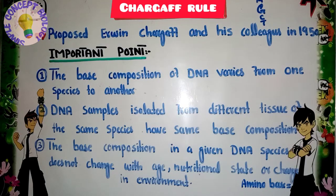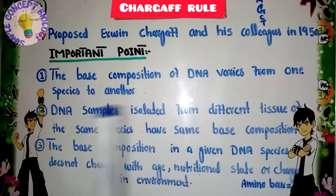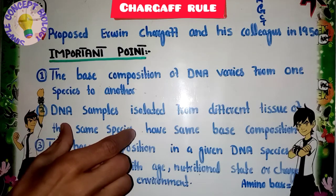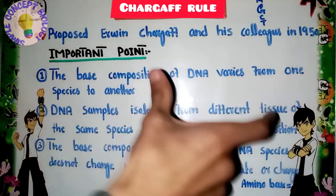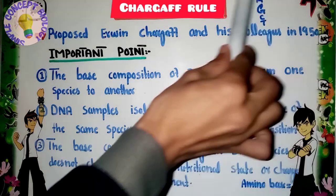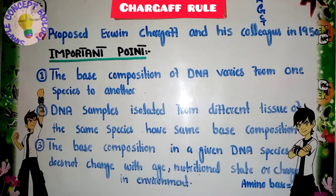The second point Chargaff stated is that DNA samples isolated from different tissues of the same species have the same base composition. This means that when we isolate DNA from different tissues of the same species, the concentration of the four bases remains the same for that particular species.